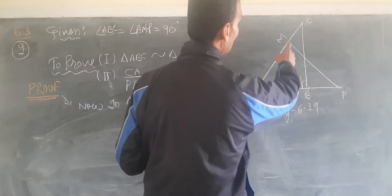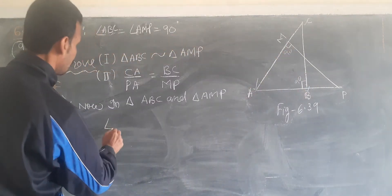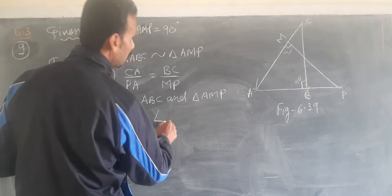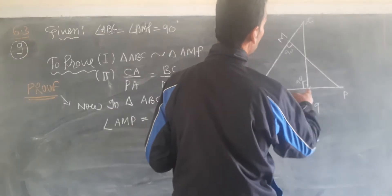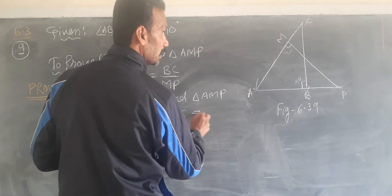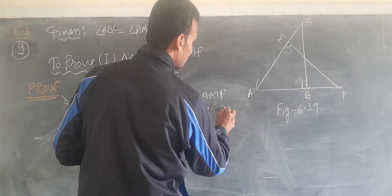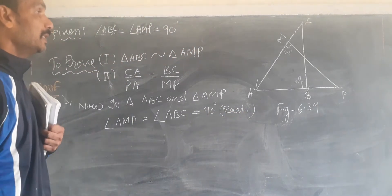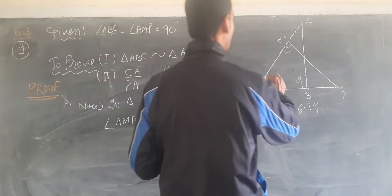Angle AMP equals angle ABC, each 90 degrees. And angle A is common angle.